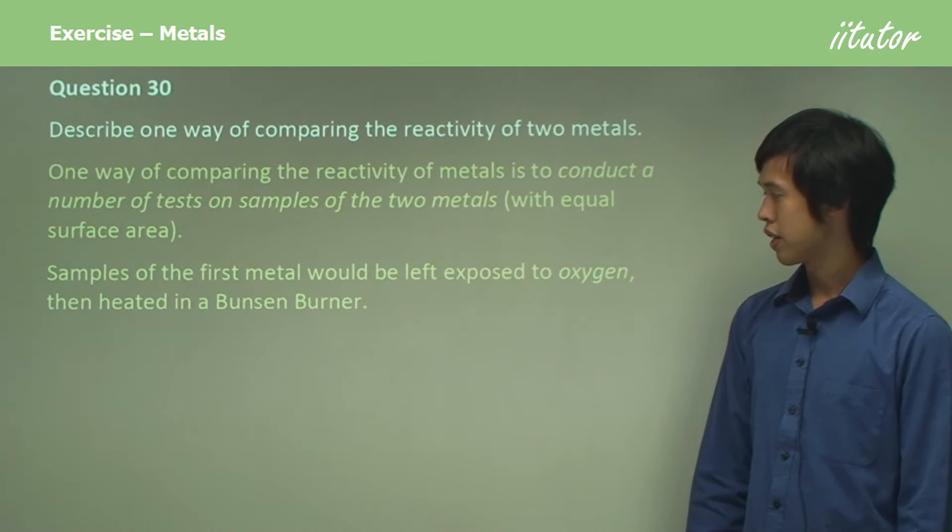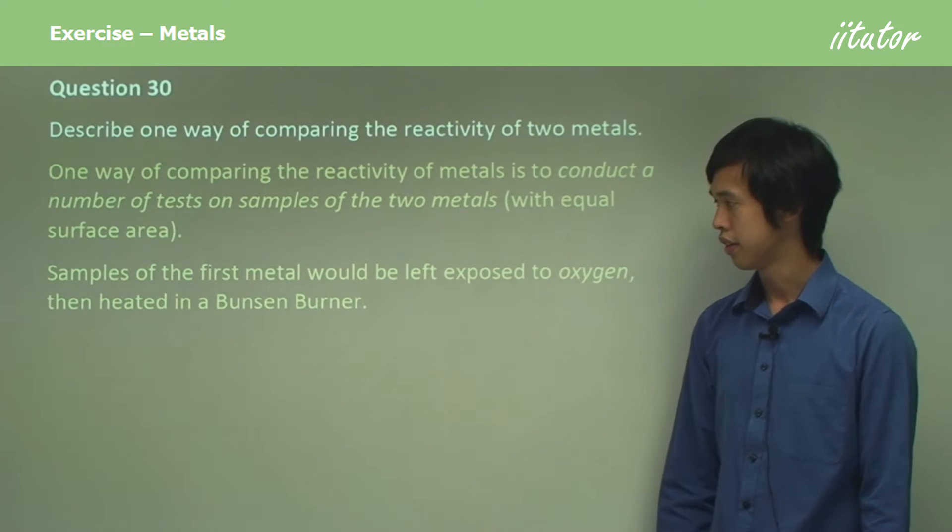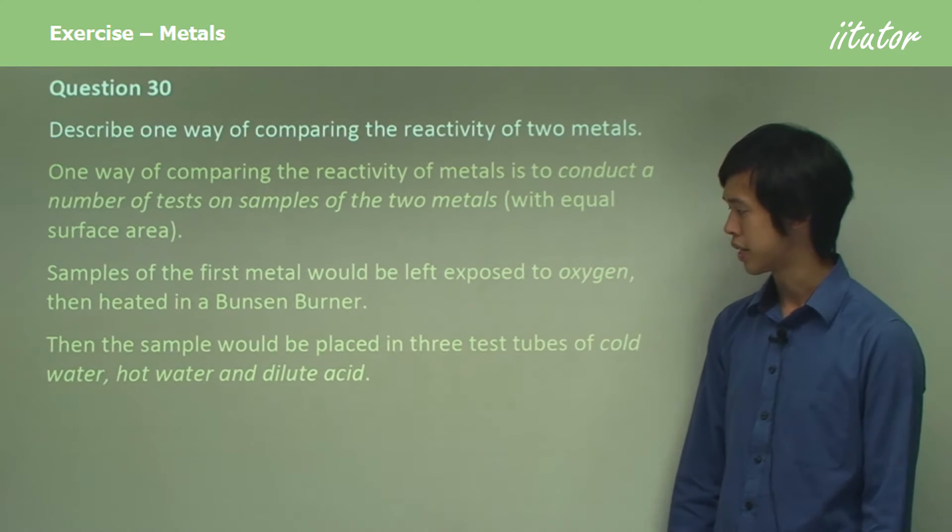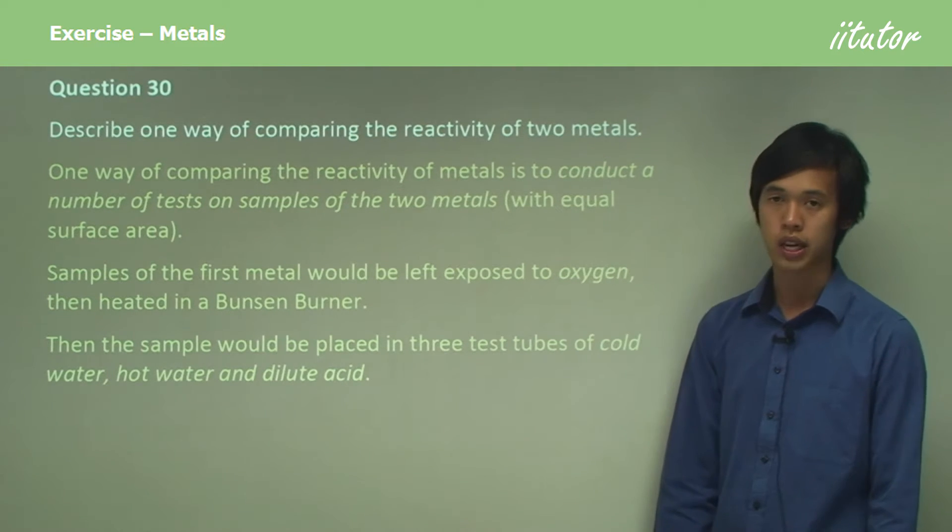Samples of the first metal would be left exposed to oxygen then heated in a Bunsen burner. Then the sample would be placed in three test tubes of cold and hot water, and dilute acid.